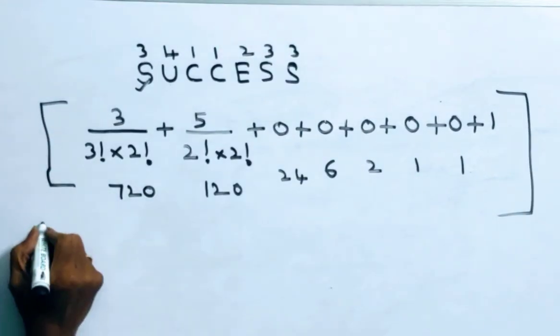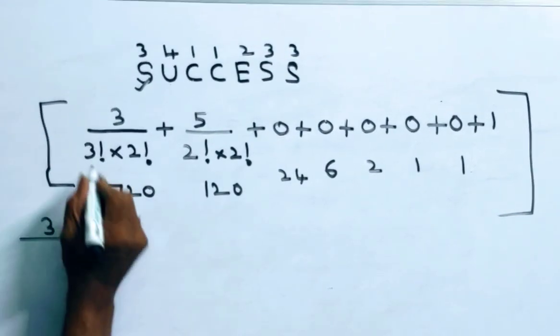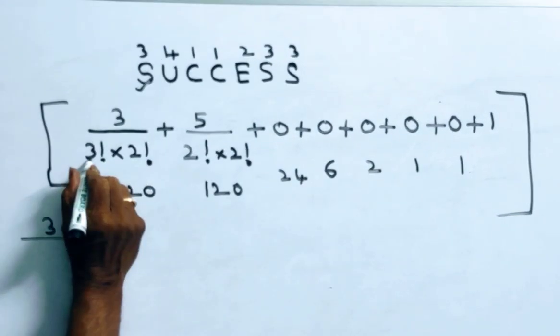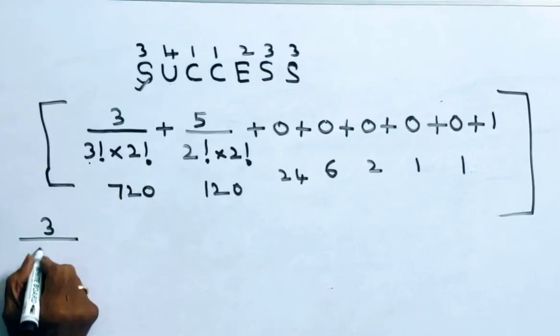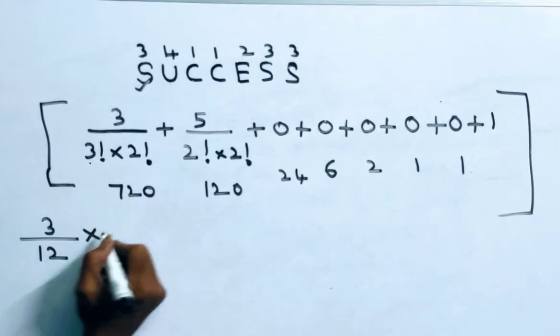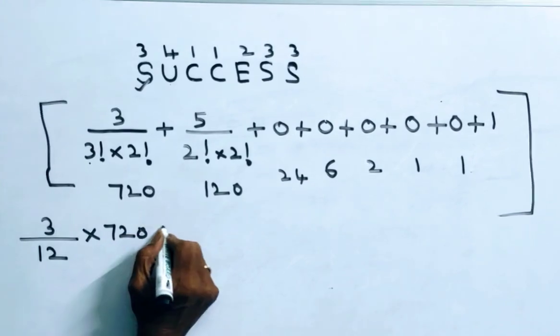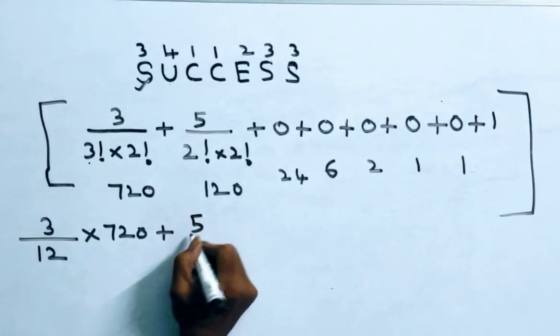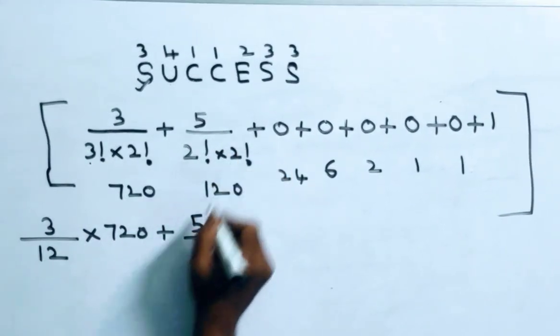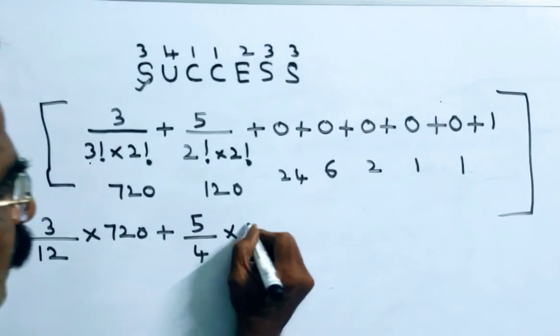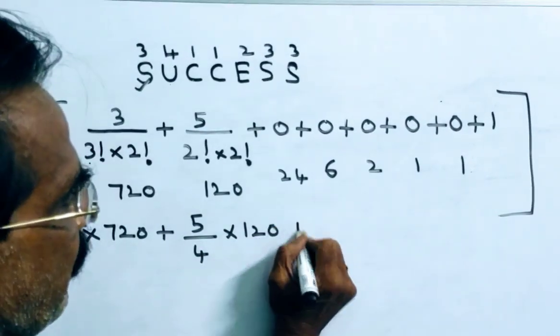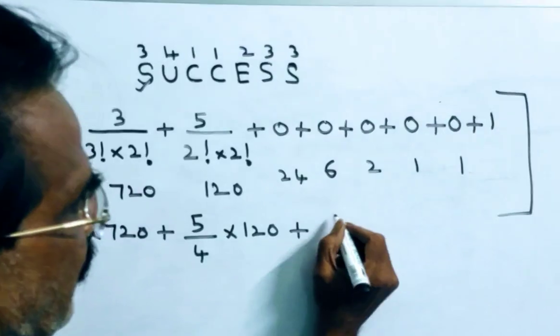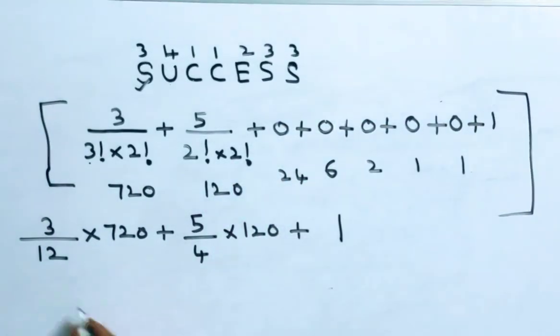See friends, 3 factorial is 6, 6 into 2 is 12, into 720, plus 5 by 2 into 2 is 4, into 120, plus 1, plus 1, all these are 0's.